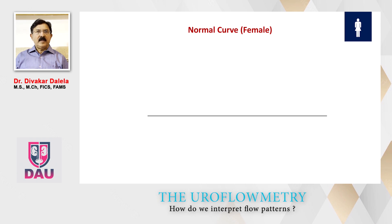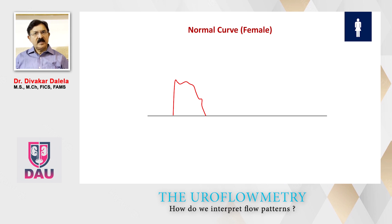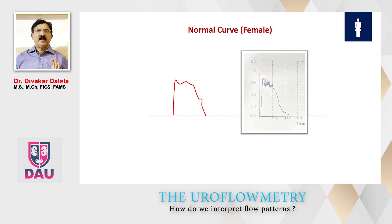If you see a normal uroflowmetry curve generated by an adult female, this will be a graph like an inverted U with a little narrow base. Women empty their bladder much quicker than males of the same age group. They usually have a little higher Qmax — close to 30 ml/s — and the flow time is about 10-15 seconds.